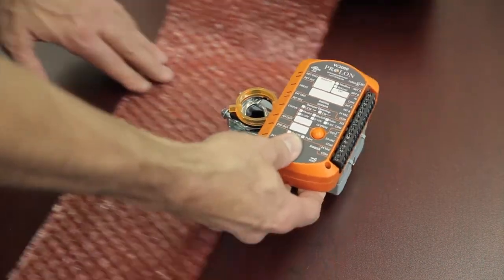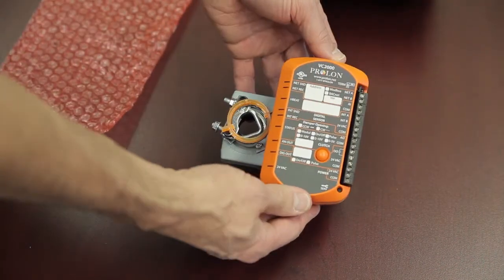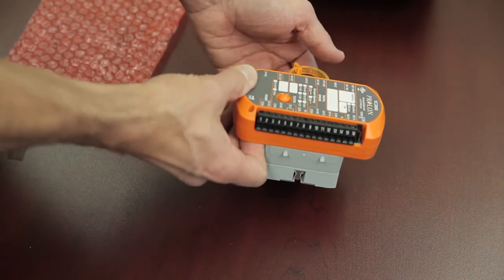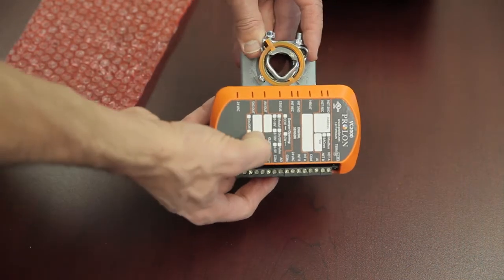In today's video we'll see how to set up a VC2000 for automatic heating and cooling changeover using a duct temperature sensor and also how to set up terminal heating.